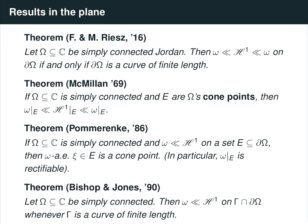Later, Bishop and Jones gave a very powerful generalization of Macmillan's results. Absolute continuity of harmonic measure occurs not just at the cone points, but on subsets of any rectifiable curve — and recall that on a rectifiable curve, not all points necessarily need to be cone points.